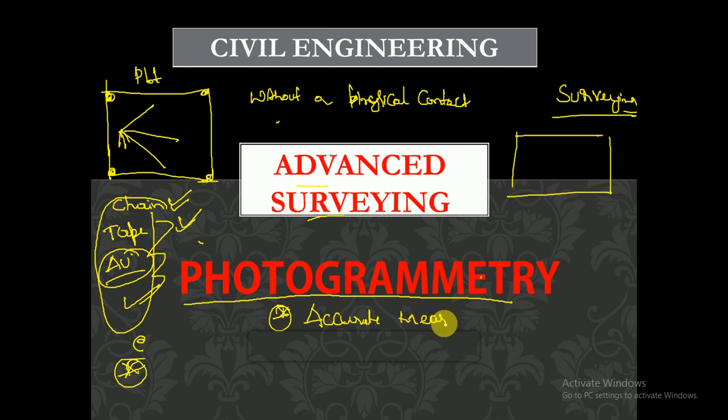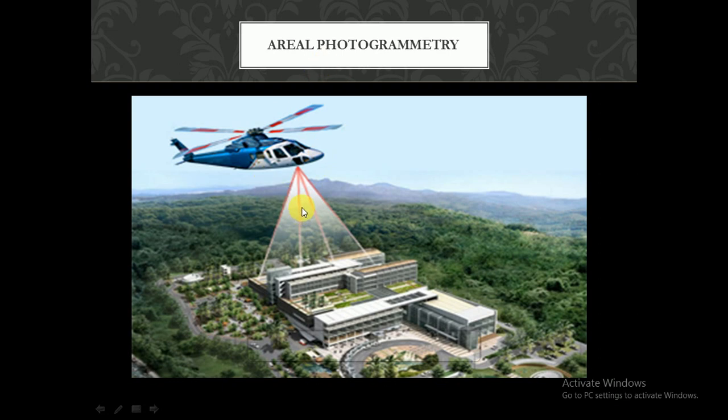The definition: photogrammetry is a science and art of determining accurate measurements by using photographs, for various purposes such as the construction of topographic maps and the preparation of composite pictures. The camera is fitted to a helicopter, the image is taken, and the images are copied to the computer system. After that, all the measurements can be taken automatically just with the help of those images.